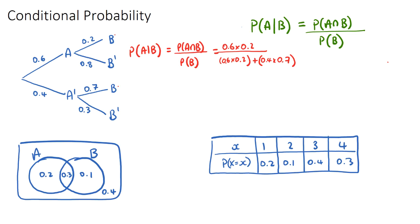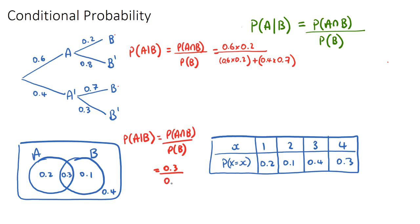In Venn diagram questions, if it says the probability of A given B, we can still use the formula: the probability of A intersection B over the probability of B. The intersection of A and B is the middle bit, which is 0.3, and the probability of B is all the probability inside B: 0.1 and 0.3, so 0.4. That gives us 3 over 4.